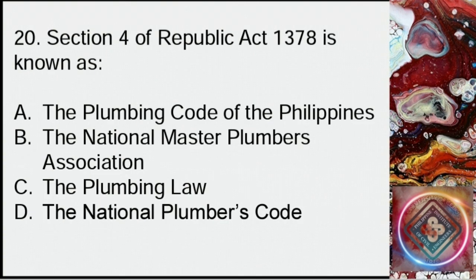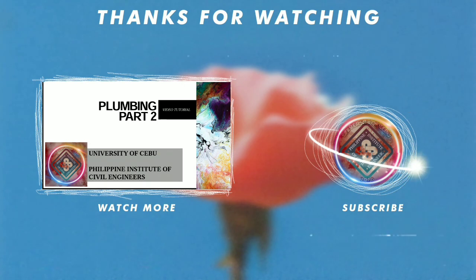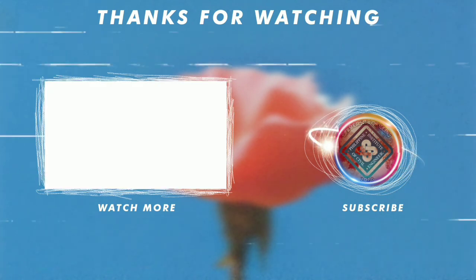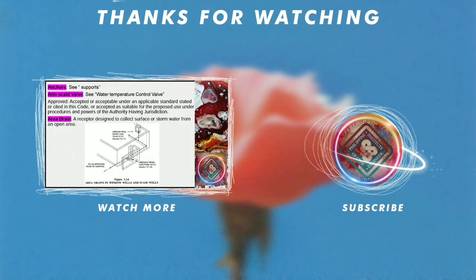Question 20: Section 4 of Republic Act 1378 is known as: A: The Plumbing Code of the Philippines, B: The National Master Plumbers Association, C: The Plumbing Law, D: The National Plumber's Code. Answer: C, the plumbing law.